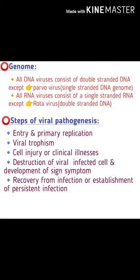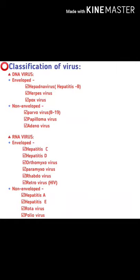Steps of viral pathogenesis: first, entry and primary replication; then viral tropism; then cell injury or clinical illness, restriction of viral infection, development of signs and symptoms; and finally recovery from infection or establishment of persistent infection.